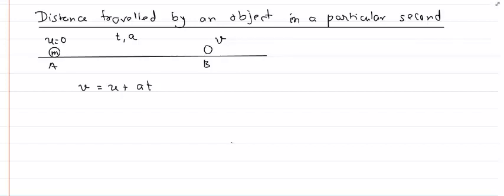The question we are trying to answer is: what is the distance traveled by an object in a particular second? Let's take an example. We have an object of mass m with initial velocity 0 at location A. A force is applied and the body accelerates with constant acceleration a for time t, reaching final velocity v, given by v equals u plus at.